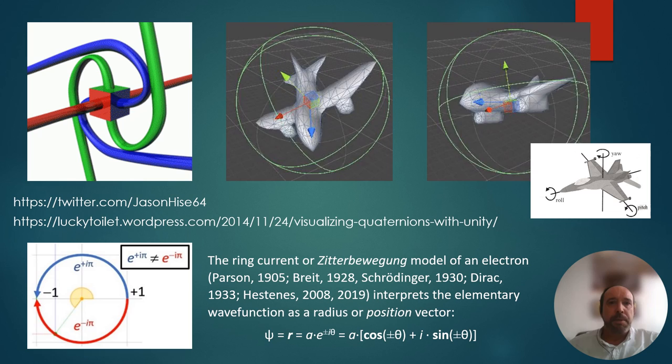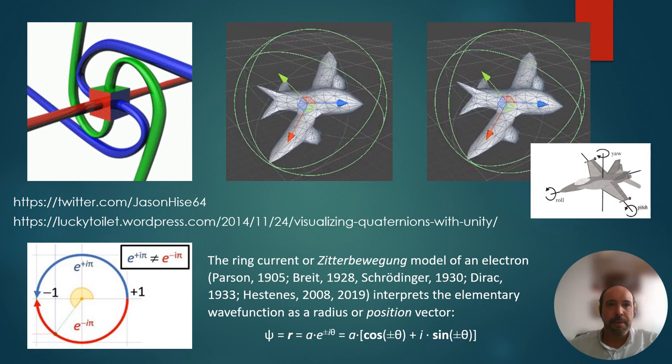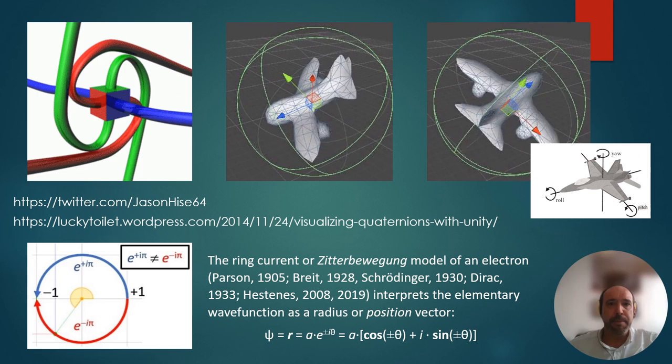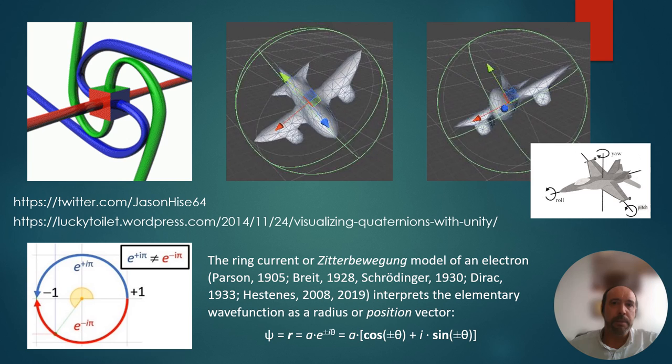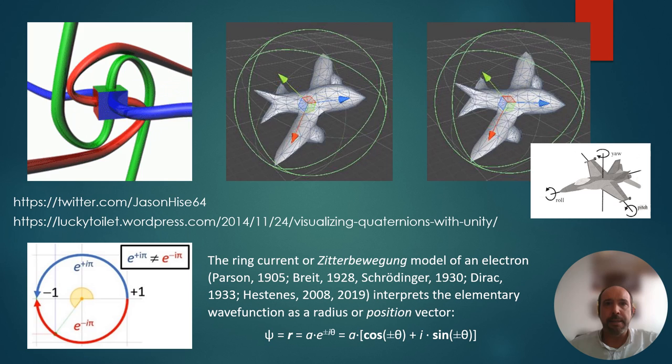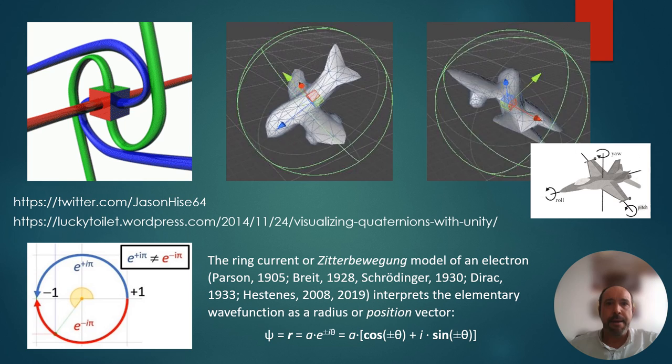These animations come from a WordPress site called Lucky Toilet — quite a name. It's by someone very skilled with Unity programming software and quaternion math. That complex algebra is a very nice mathematical instrument for modeling rotations in 3D space.